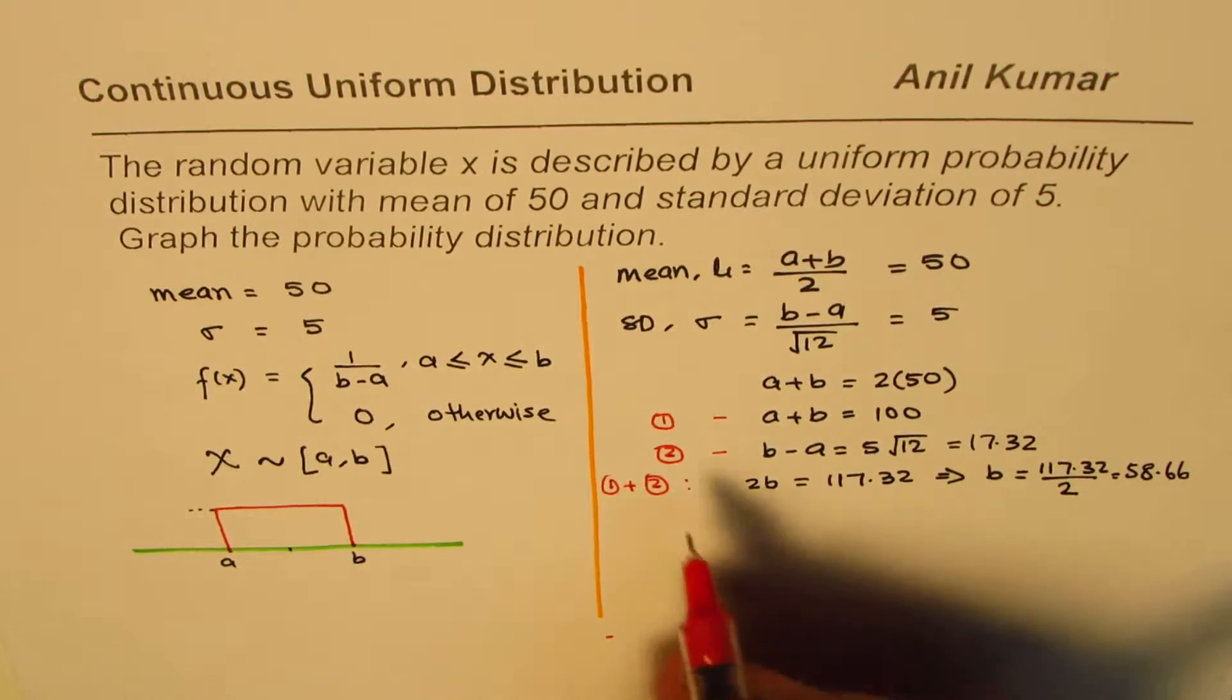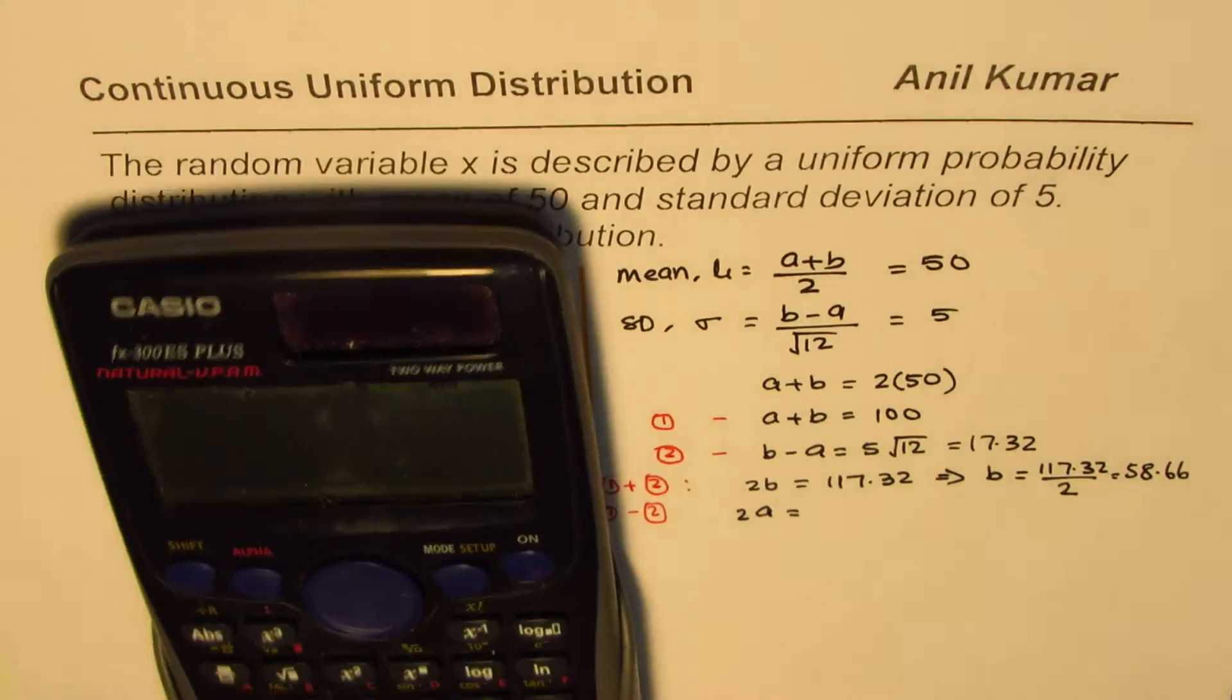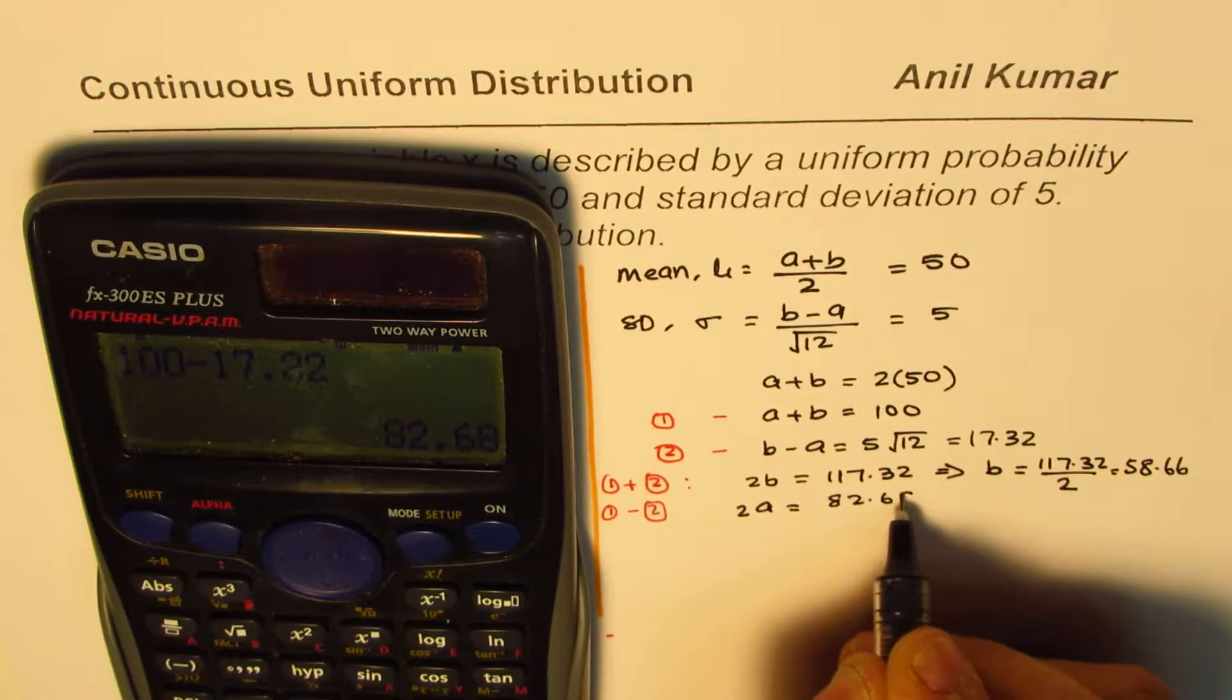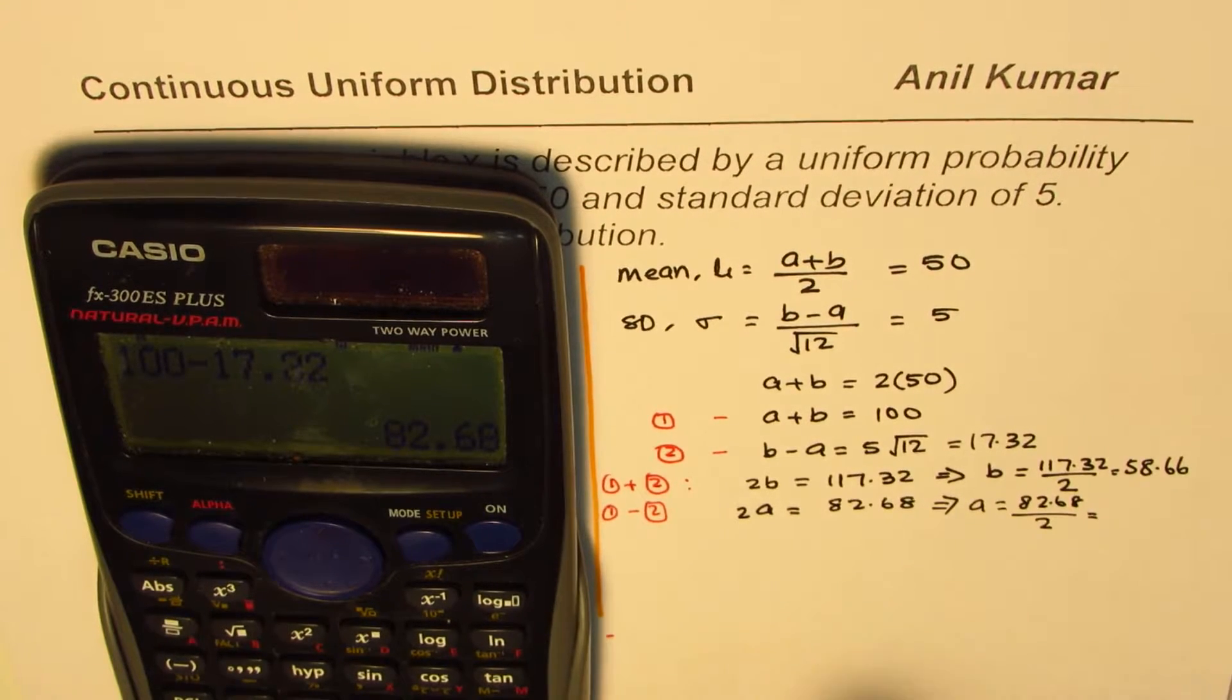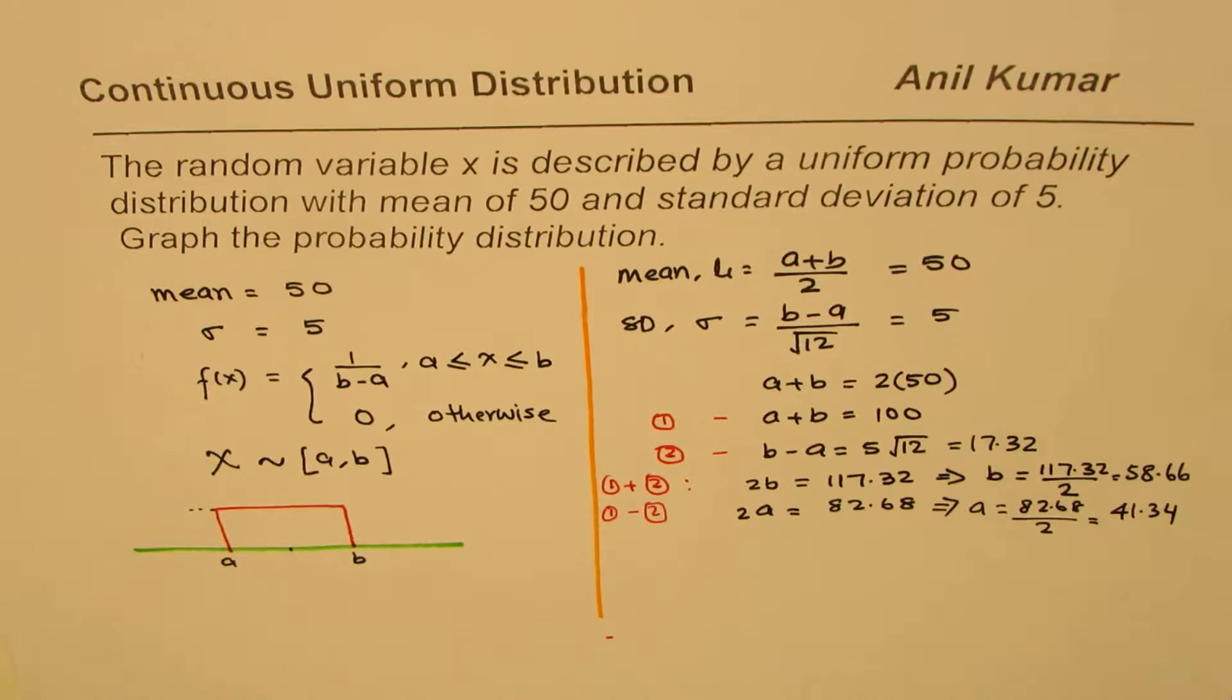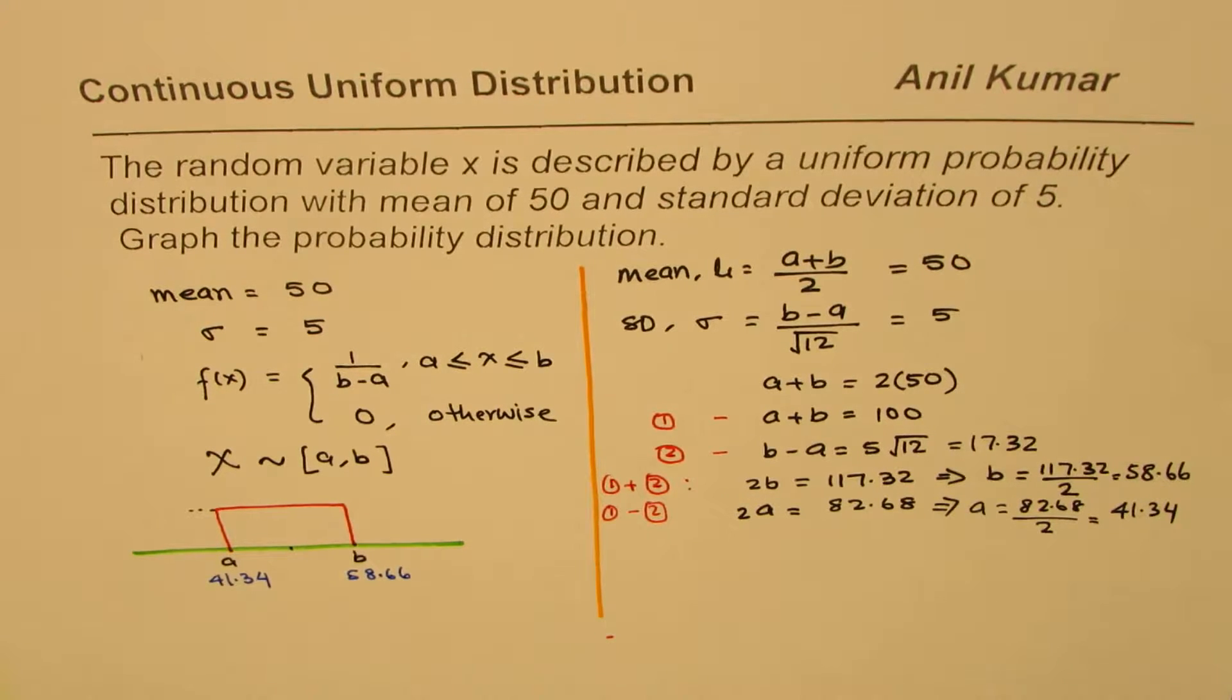If we subtract, that is to say, if I do equation 1 minus equation 2, then we get 2a, b cancels. So we get 2a equals 100 minus 17.32, which equals in decimals 82.68. And that gives the value of a as 82.68 divided by 2, which is 41.34. So we get the value of a. So in this case, what we find here is that the value of a is 41.34, and the value of b is 58.66, to two decimal places.